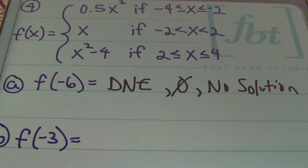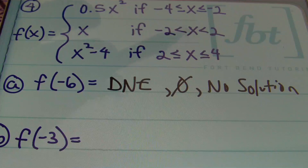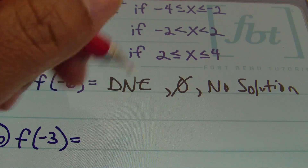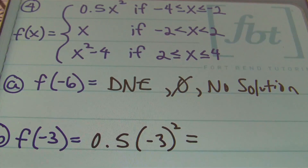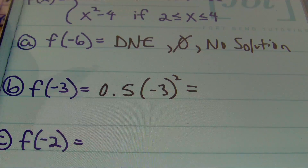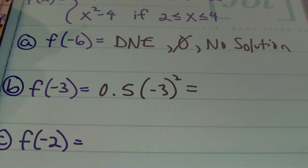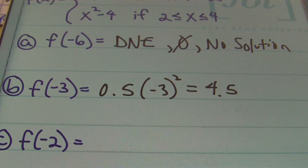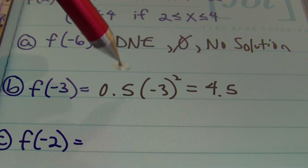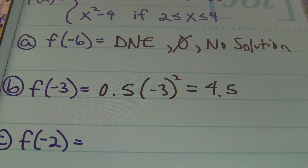For part b, find the value of y when x is negative three. We use the first part of the function, giving five tenths times negative three squared. Negative three squared is positive nine, and nine times five tenths gives four and five tenths. Multiplying by five tenths is the same as dividing by two, and half of nine is four point five.